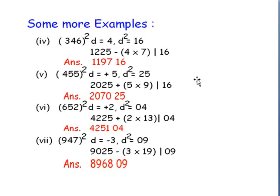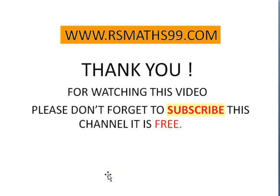Let us take some more examples. 346 square: it is nearer to 350. Difference is 4, so difference square is 16. Here 1225 is the square of 35. So 1225 minus 7 into 4 gives 1197. So the answer is 119716. One more example: 947 square. This number is nearer to 950. Square of 95 is 9025. Its difference from 950 is 3, so difference square is 09. We write 09 on the right side, and 9025 minus 19 into 3 gives 896809. This 19 comes from dividing 95 by 5, giving 19. So 19 into 3 is done.